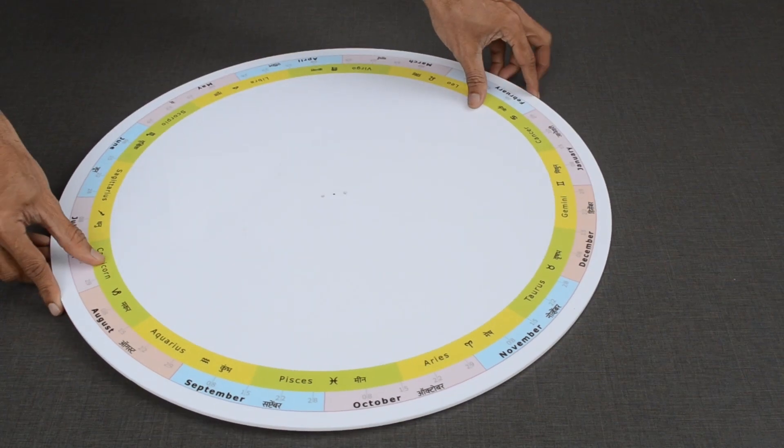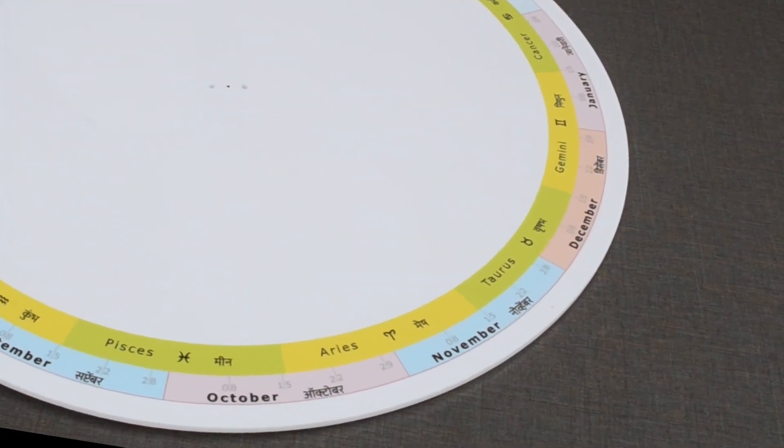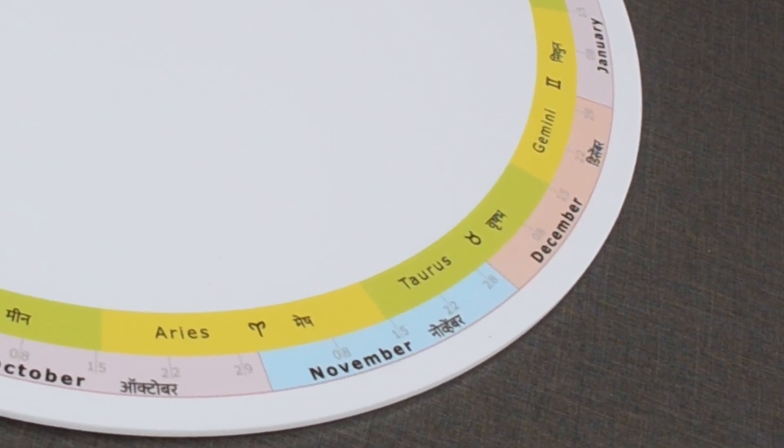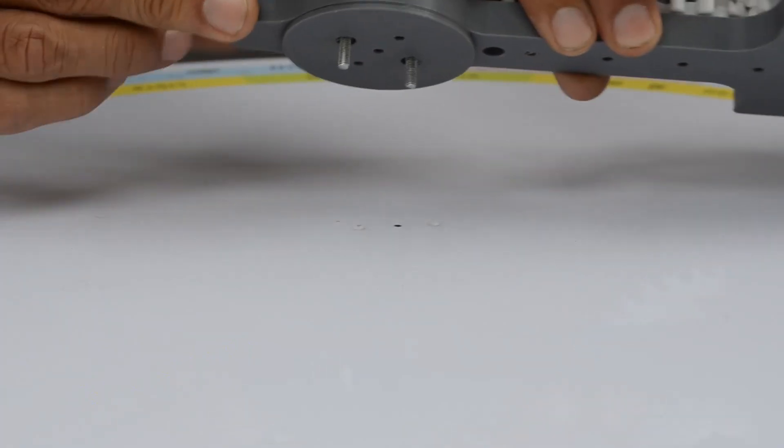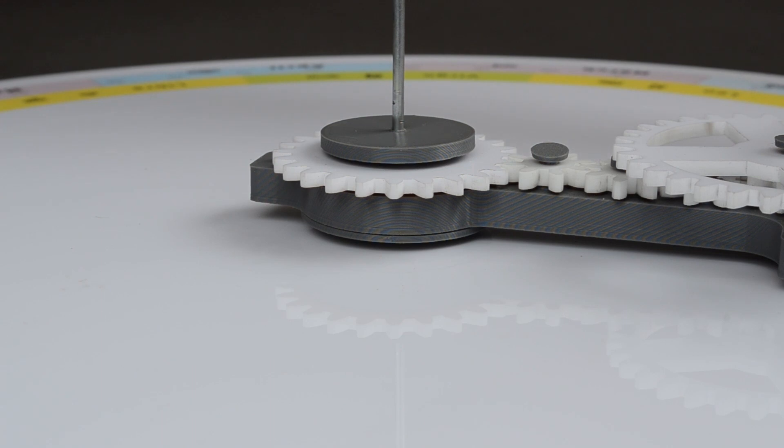This round dial is directly printed on white acrylic sheet. Outer circle has an English calendar, while the inner one indicates a zodiac. Model is locked in place with the dial by placing these two small screws in the slots here.